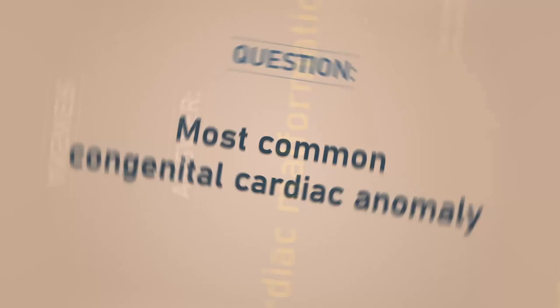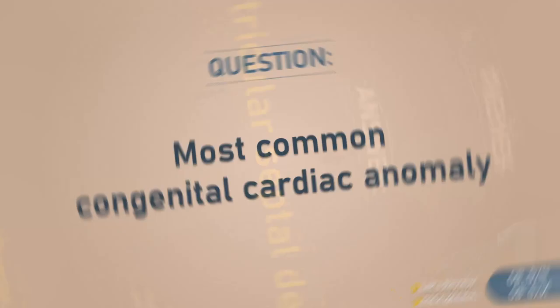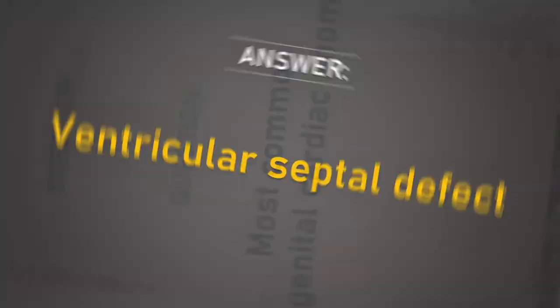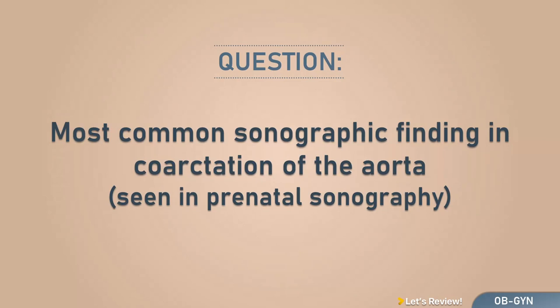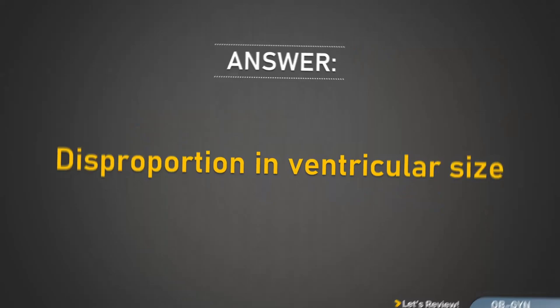Most common congenital cardiac anomaly: ventricular septal defect. Most common sonographic finding in coarctation of the aorta seen in prenatal sonography: disproportion in ventricular size.